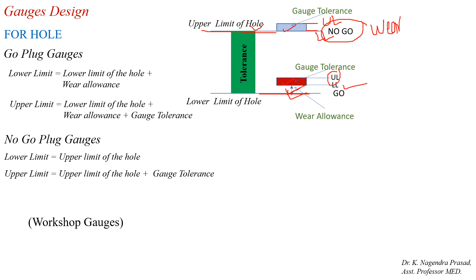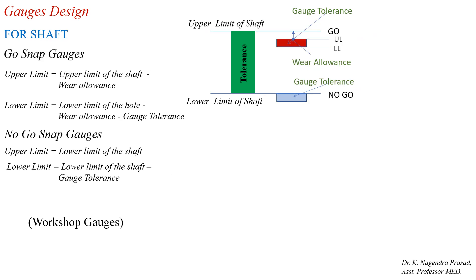This schematic representation is for the workshop gauges. For inspection gauges that is a different concept; from an exam point of view we discuss only for workshop gauges. Similarly, for gauge design for the shaft, the gauges used for the shaft are called snap gauges. This is the schematic representation of the workshop gauges for the go and no-go gauges for the shaft. For the go snap gauge, the upper limit is equal to the upper limit of the shaft minus the wear allowance.